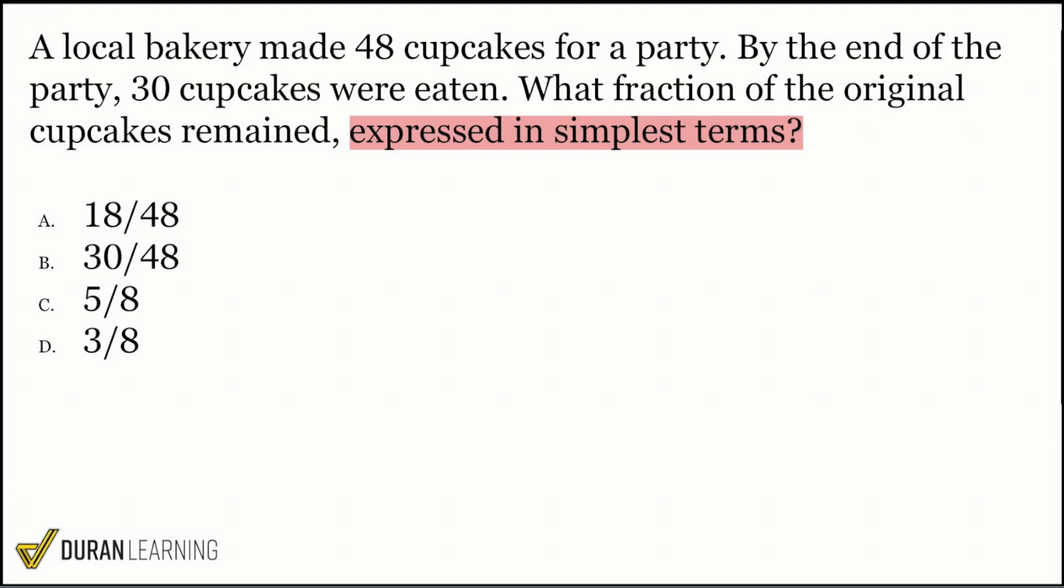Yeah, A and B. A and B are not in simplest terms. Like these are both even numbers. You can simplify that. 30 and 48, both even numbers as well. You can simplify that too. You can immediately cross out A and B because those are not in simplest terms.